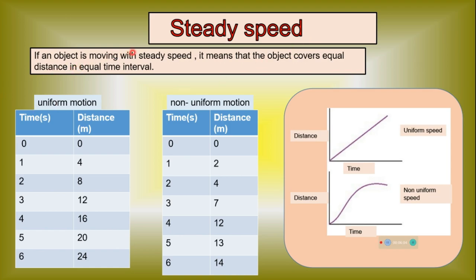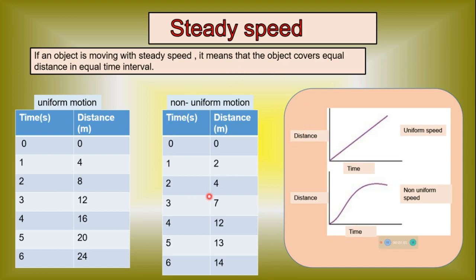What is steady speed? If an object is moving with steady speed, it means the object covers equal distance in equal time intervals — this is uniform speed. The graph showing steady speed will be a straight line sloping up. This graph represents non-uniform speed, where the rate of change of speed is not equal for equal time intervals. For uniform speed, the distance-time graph is a straight line, while for non-uniform motion it will be a curved line.